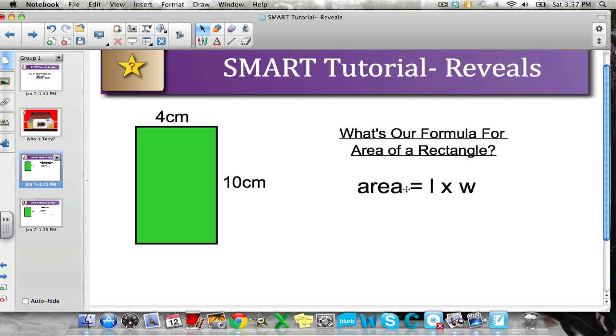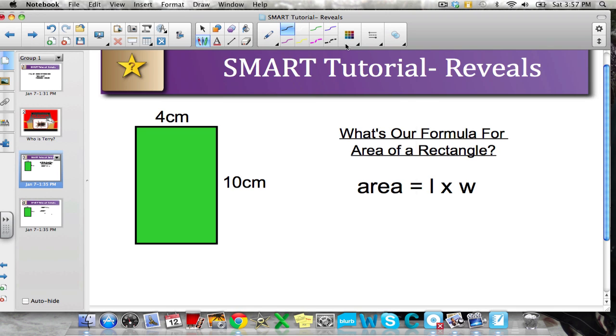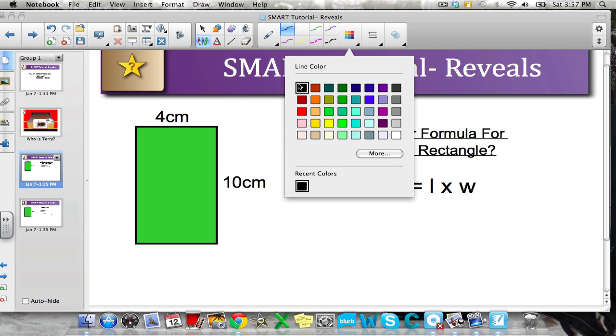So I'm going to cover up this formula that I just put in. To do that, I'll go into my markers, select pen, and select a line color that is the same color as the background of my slide page. In this case, we're selecting white.